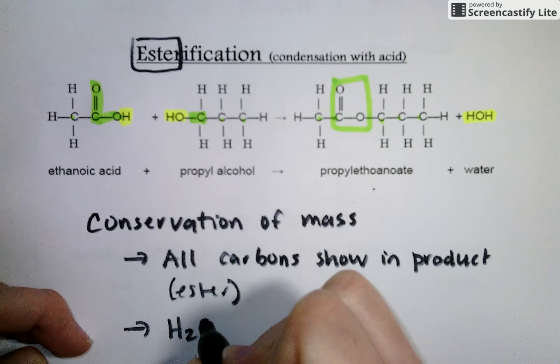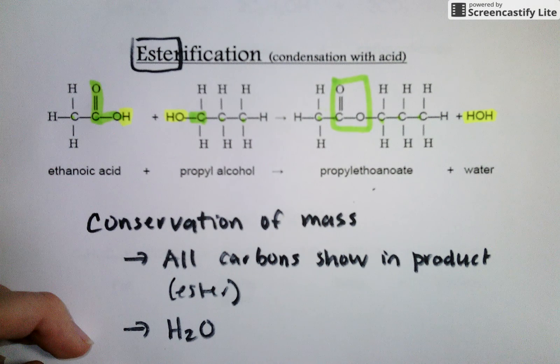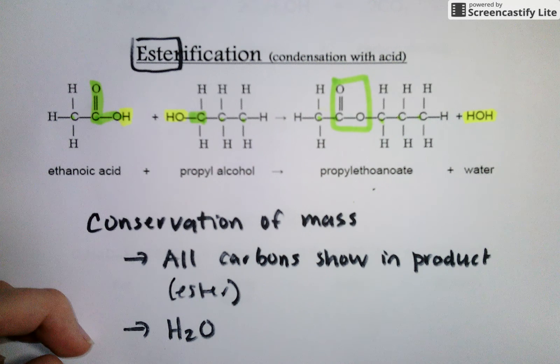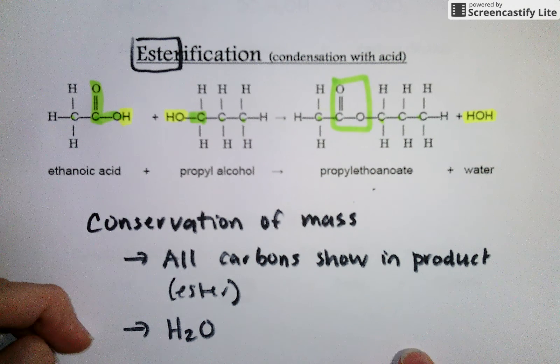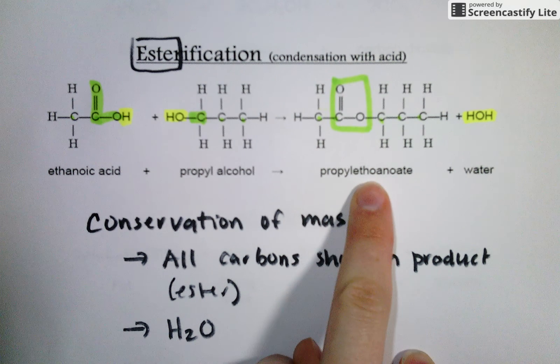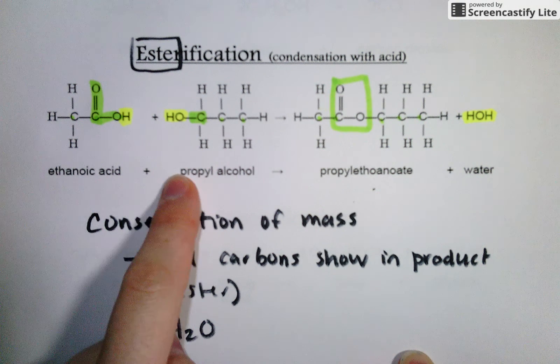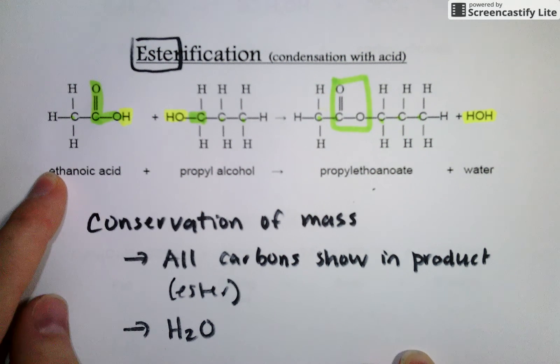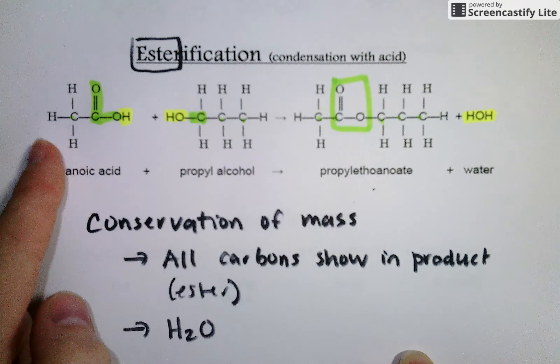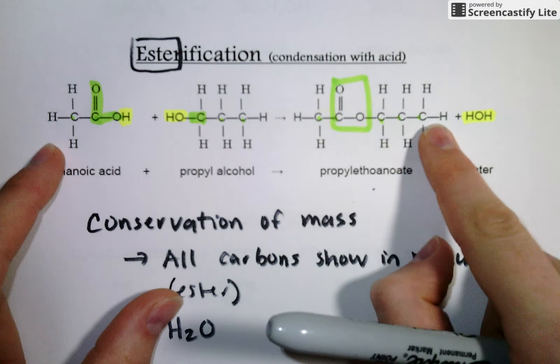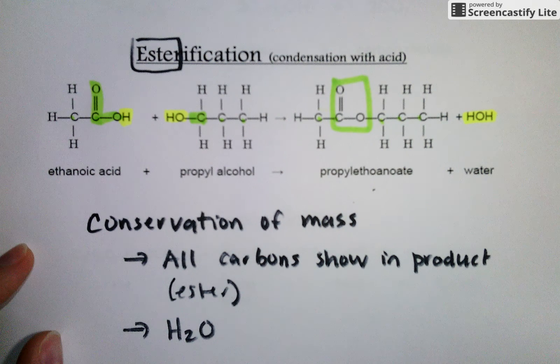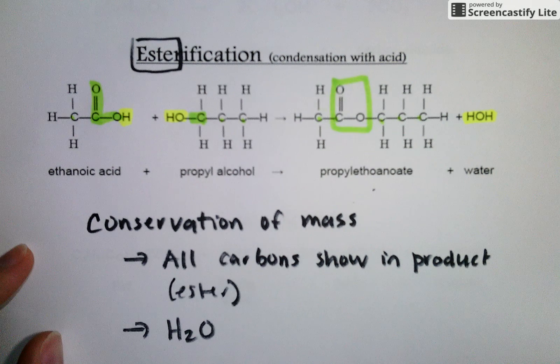And you will always, always, always produce H2O. So if you know to conserve mass and you know that water will always be a product of esterification, then you're going to be able to not only predict what your final ester will look like, but if you know what your final ester looks like, you know which alcohol and acid was used to generate it. Everything to the left of this double bonded oxygen comes from your acid, whereas everything to the right of your oxygen must have come from your alcohol. So in the next video we'll take a look at the other reaction types, but hopefully this helps break down those first four.